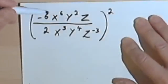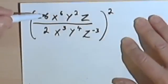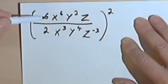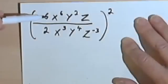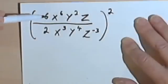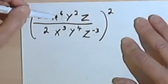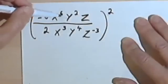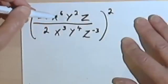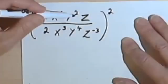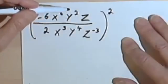This looks complicated, but we can think of it as a series of smaller problems. When dealing with a problem like this, we can think of the coefficients separately — the negative 6 and the 2 — and deal with that as a fraction. We can take each of the variables, the x, the y, and the z, and deal with each variable separately. That'll make things a lot easier.